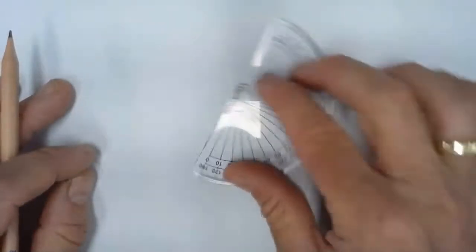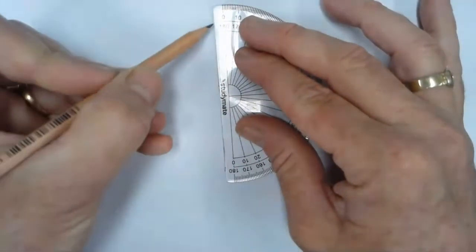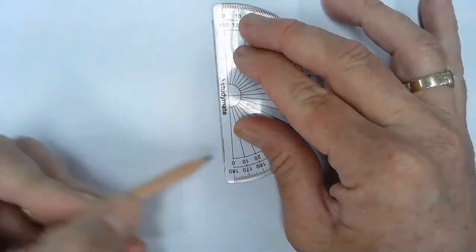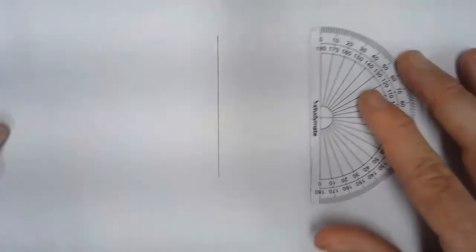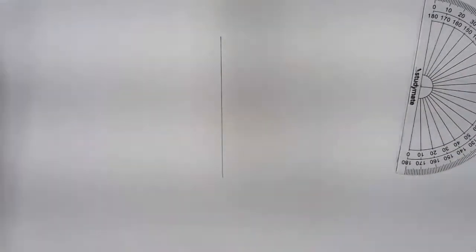Okay, so we're going to test the law of reflection. First of all, we need to draw a nice straight line using a nice sharp pencil on some clean white paper. This straight line is going to be where our plain mirror is going to go.